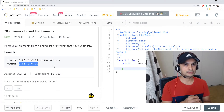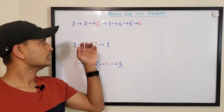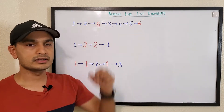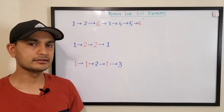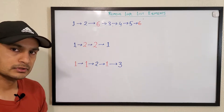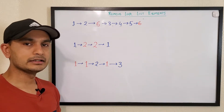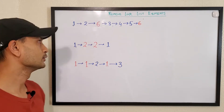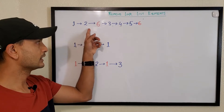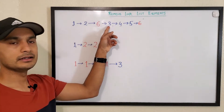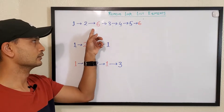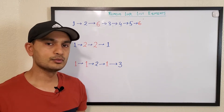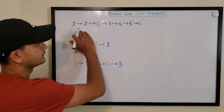We'll consider the example from the problem description to understand the Remove Linked List Elements problem. If you've worked with linked lists, this is a straightforward problem. All we have to do is make sure that node.next points to the next element, so we skip the element that we need to remove.